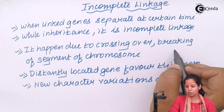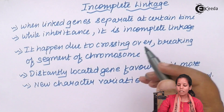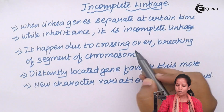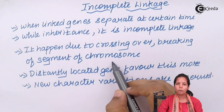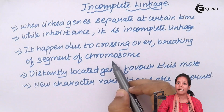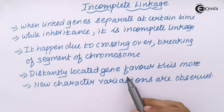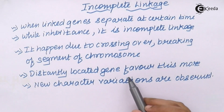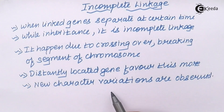During crossing over, breaking of segments of chromosomes takes place. Once that happens, distantly located genes — genes which are at farther positions — favor this more. New variations in characteristics are also observed.